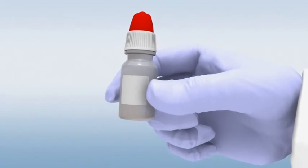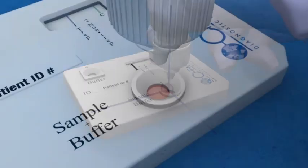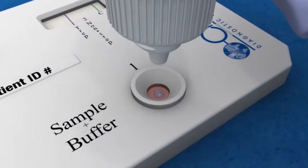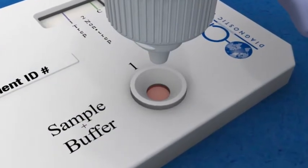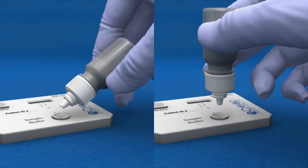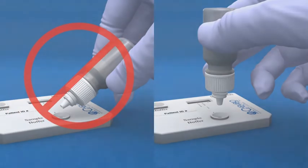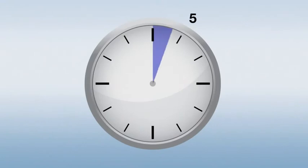After removing the red cap of the running buffer bottle, hold the bottle vertically and dispense two drops into well 1 of the DPP device by gently squeezing the side of the bottle. Caution: Holding the bottle sideways may produce invalid results. Now wait 5 minutes.